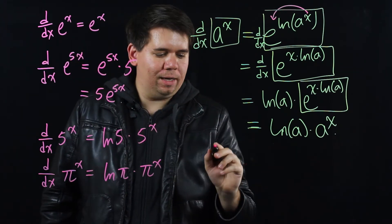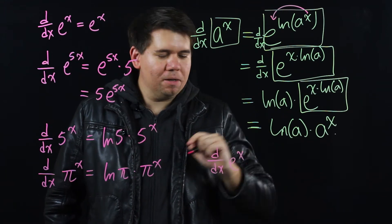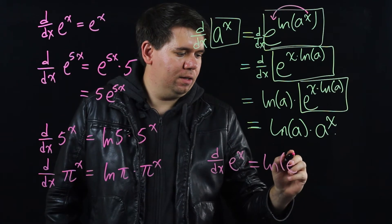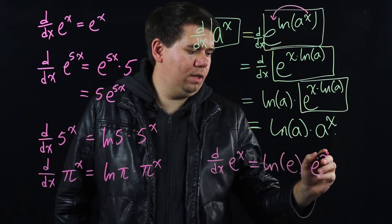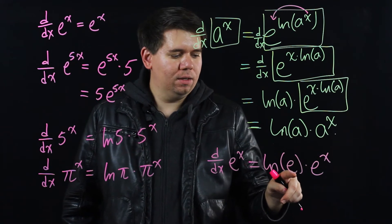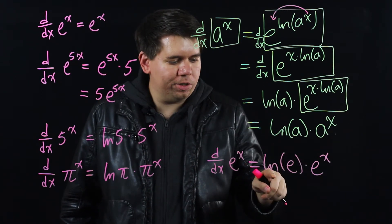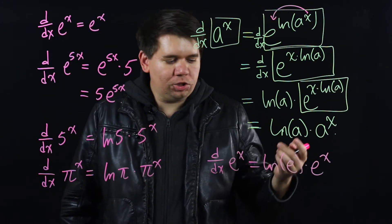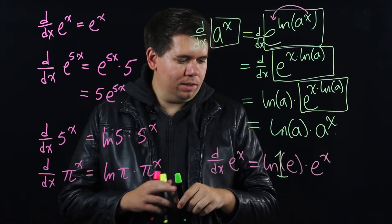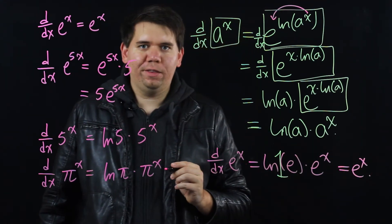Now you might be concerned because you say wait wait wait. What about e to the x? Doesn't this say the derivative of e to the x should have an ln piece? Yeah it does. It's ln of e times e to the x. But what is the natural log of e? Natural log is log base e. So this is asking e to what power gives you e? Well it's just 1. ln of e is secretly just 1. So this in fact is e to the x.